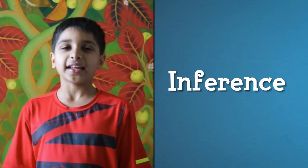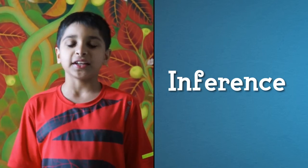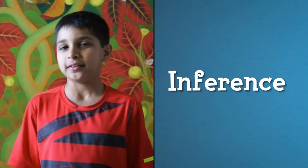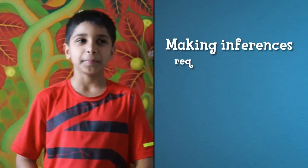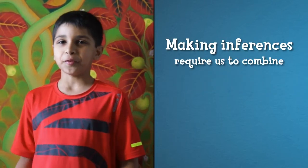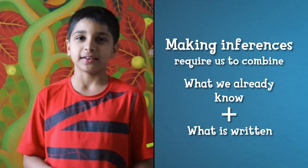An inference is made by drawing conclusions based on the information implied rather than directly stated. An inference is made by putting the information that we already know together with what is written to get the answer. Can we say that the boy is angry? We don't really know. But looking at the expression, we can infer that he is angry.